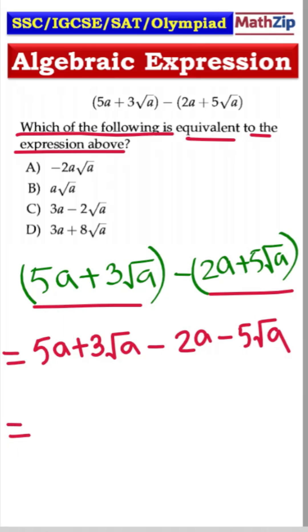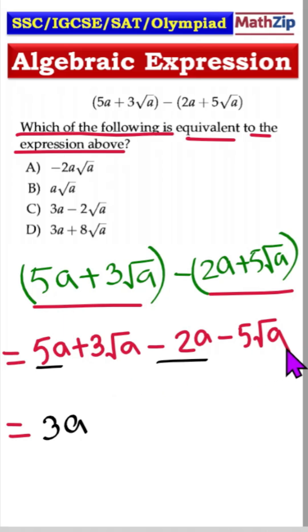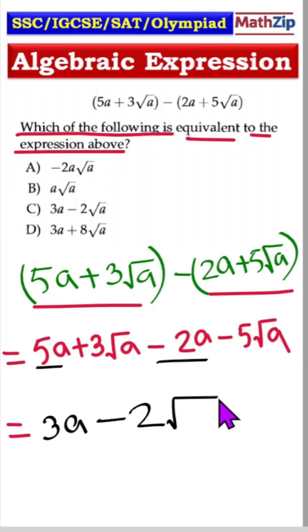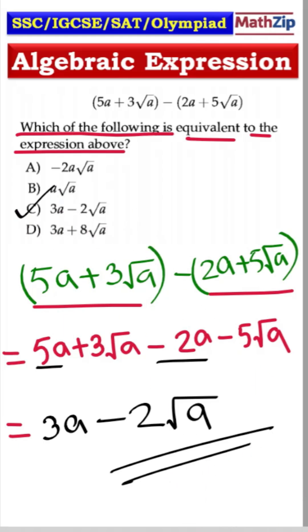Now, 5a minus 2a equals 3a, and plus 3 root a minus 5 root a equals minus 2 root a. So the answer is number C: 3a minus 2 root a. Thank you.